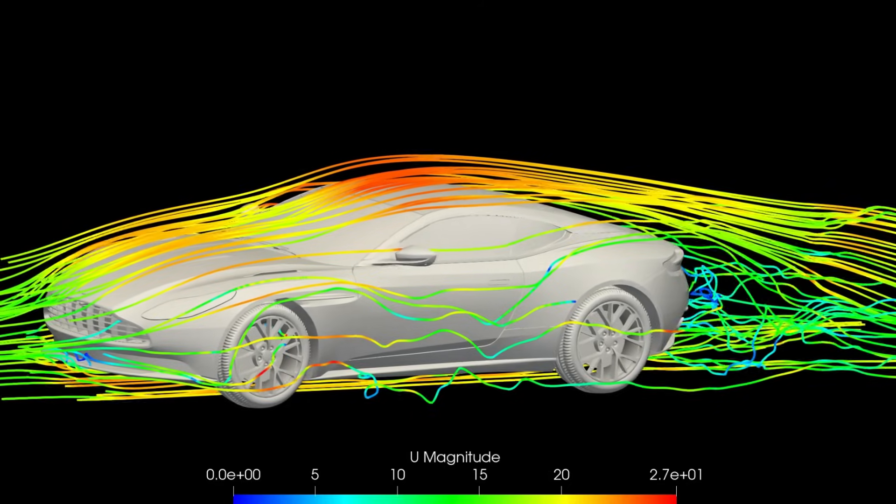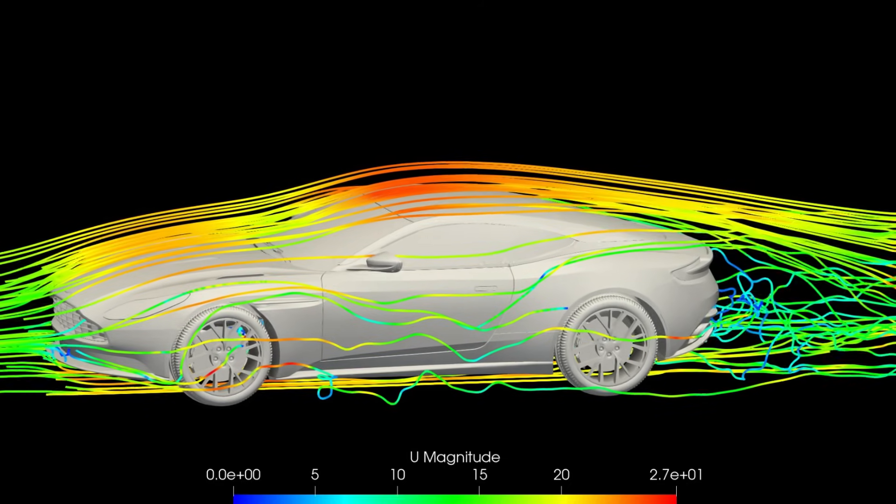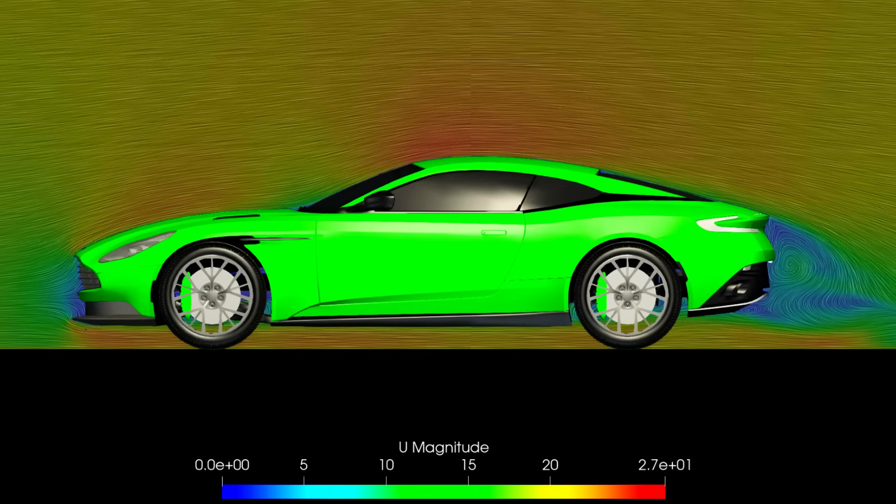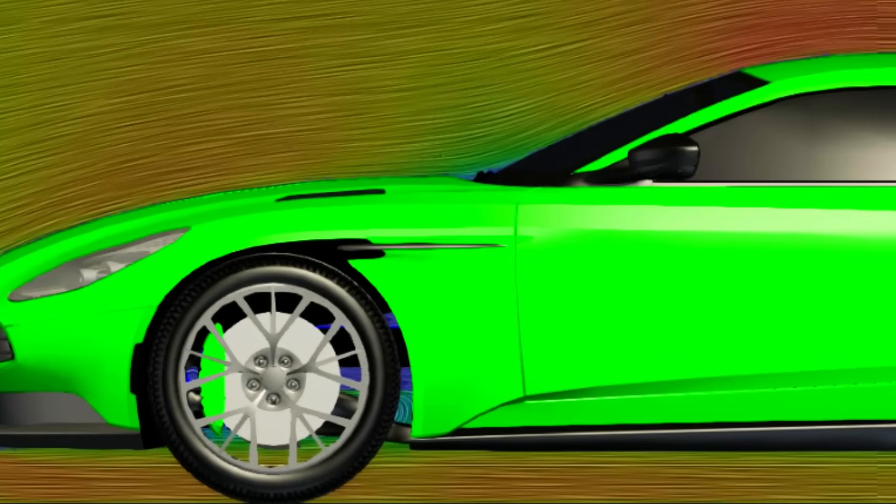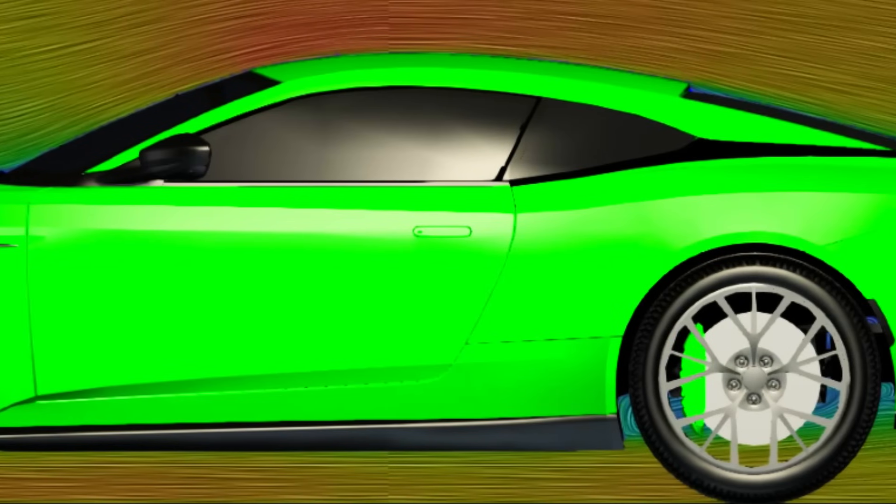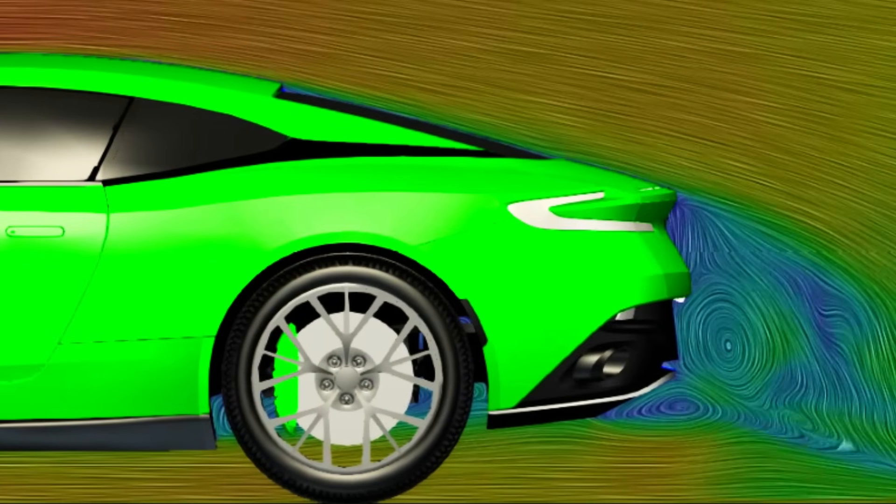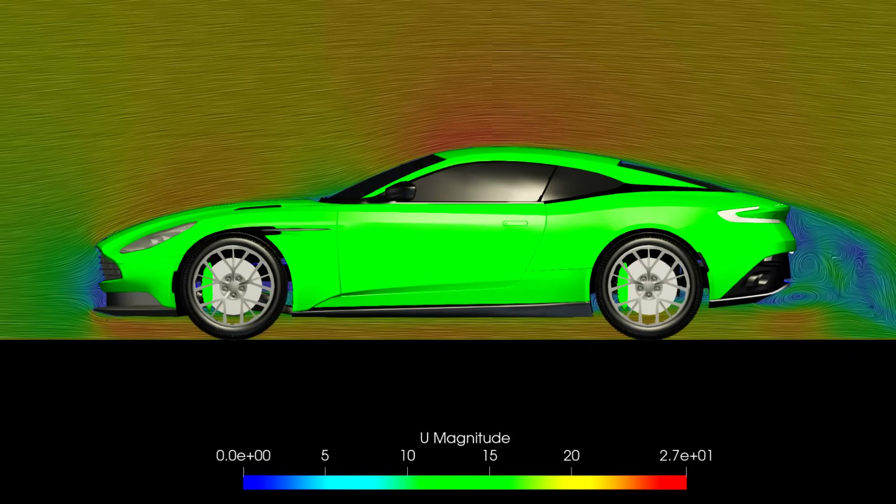This is a simulation of it at 72 kilometers per hour, or 20 meters per second. First, a plane cutting through the centerline of the car. The color bar is in meters per second. The first thing that stands out to me is that it's green, but the second thing is just how streamlined it is. Looking over the entire car, the flow stays attached everywhere except at the rear.